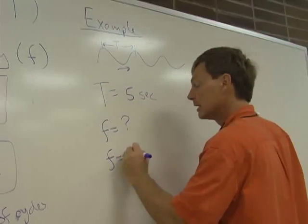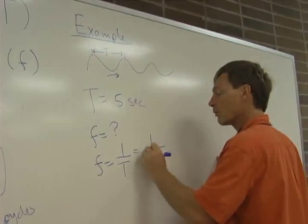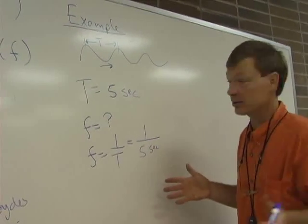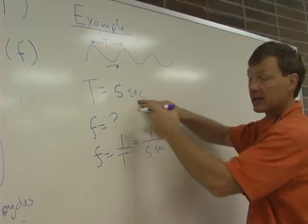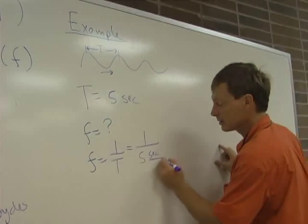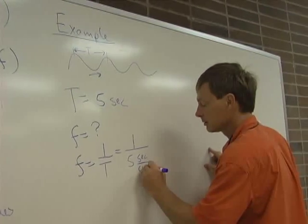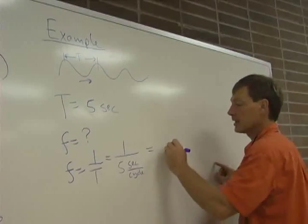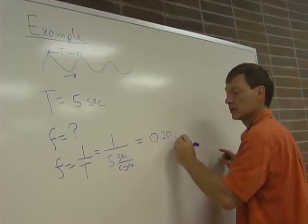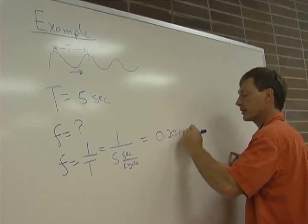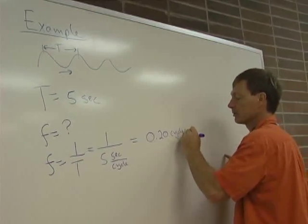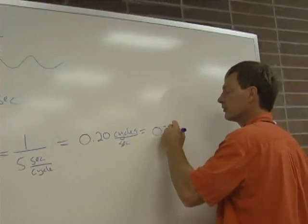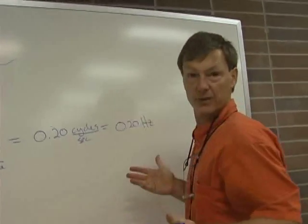The frequency is one over the period, which is one over five seconds. I don't have to say this, but it's easier for working the units. The period is five seconds. That means it's five seconds per cycle. So I'm going to add that. One over five seconds per cycle, and that's going to be 0.2 cycles per second, because it's flipped over. And that's 0.20 hertz, a fifth of a hertz.